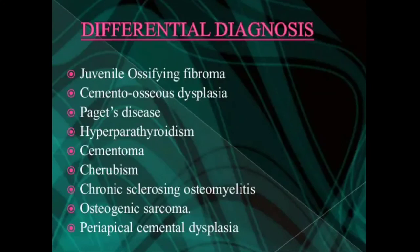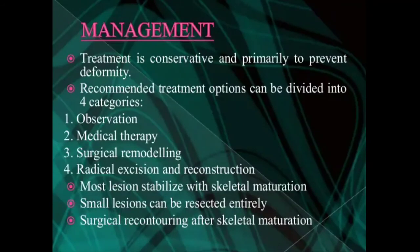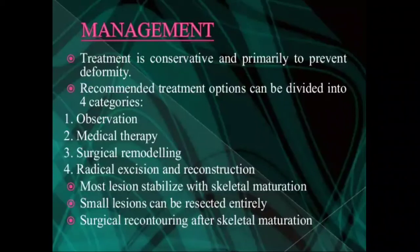The differential diagnosis includes juvenile ossifying fibroma, cemento-osseous dysplasia, Paget's disease, hyperparathyroidism, cementoma, cherubism, chronic sclerosing osteomyelitis, osteogenic sarcoma, and periapical mental dysplasia. Management follows four categories: observation, medical therapy, remodeling through surgical intervention, and radical excision with reconstruction.